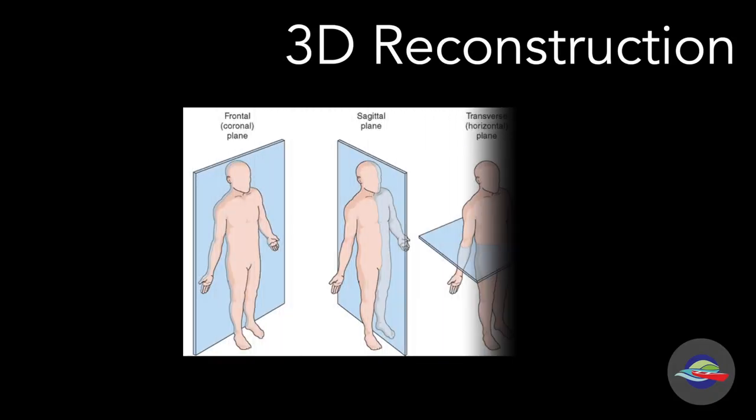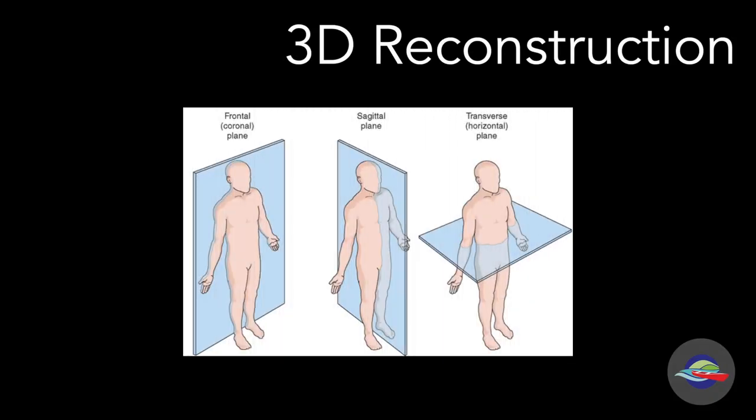We have the frontal or the coronal plane, which vertically divides the image from anterior to posterior portions. We have the sagittal or the lateral plane, which splits the image from left to right. And then we have the transverse or the horizontal plane, which divides the image into superior and inferior sections.